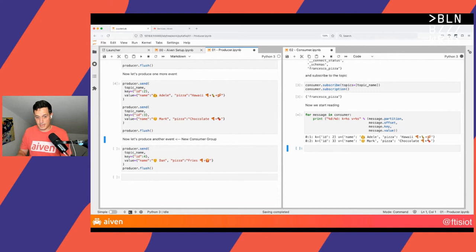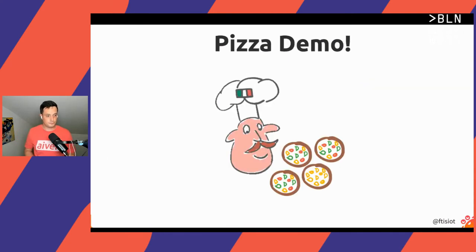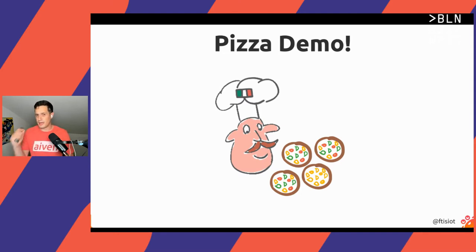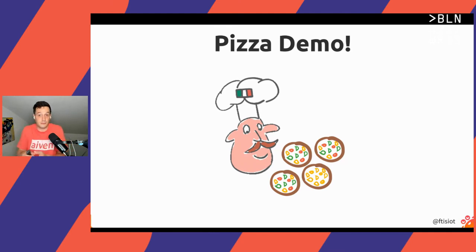Now that we've checked the basics, let's go back to a few more slides. Let's talk about the data in Kafka. We said that Kafka topics are append-only and immutable — we put data there, and once the data is there, we cannot change it. But we may not want to store data in Kafka forever. Maybe we only want to use Kafka as storage for the latest six months of our dataset.